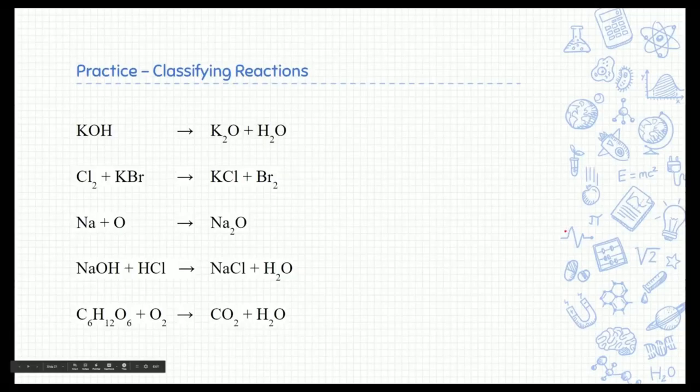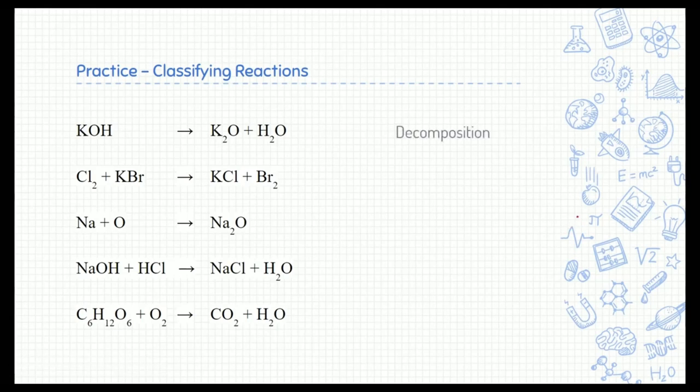Let's just do a practice being able to classify these reactions. So let's say we wrote these reactions and we want to be able to classify them. The first one is a decomposition reaction. Notice we're starting with one reactant. That's all we have and it creates two products. The second is a single replacement reaction. Notice we have our single element and then a compound and that element replaces one of the elements in that compound.